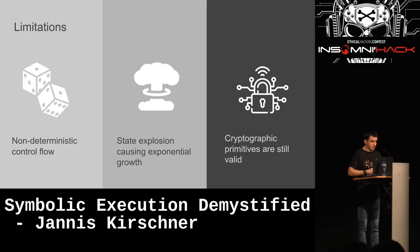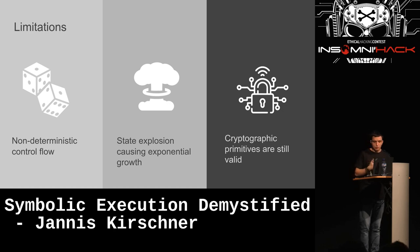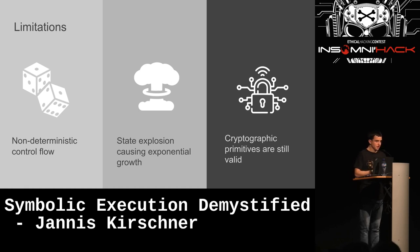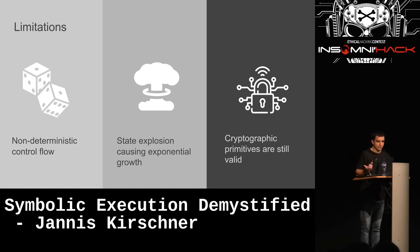Angr also has limitations, like all symbolic execution frameworks. For example, if the control flow is non-deterministic or you have a lot of concurrent execution — if a function can branch differently based on its input in complex ways — it's going to be difficult. State explosion is also a big problem, but we've learned to deal with it by avoiding and hooking. And you can't invert hash functions unfortunately — it would also cause massive state explosion to try and break crypto algorithms.